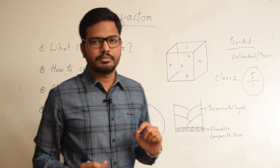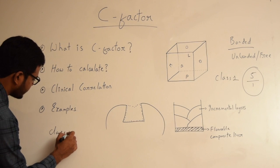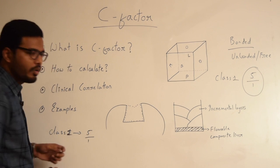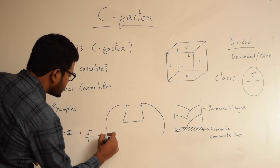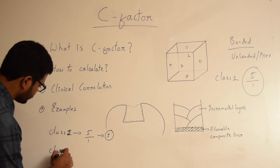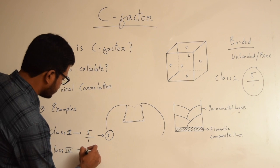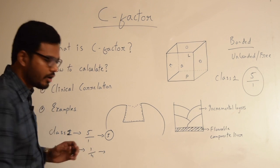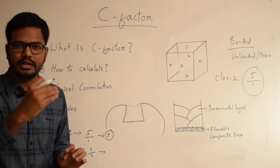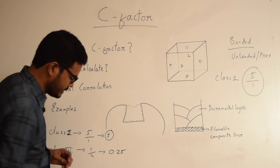Let me give you a few examples. In case of a class 1 cavity, we have five bonded surfaces to one unbonded surface, so the C-factor is 5. Coming to a class 4 cavity, the C-factor is 1 divided by 4 — that is, we have one bonded surface with four free surfaces, which include facial, lingual, proximal, and incisal. So the C-factor in case of a class 4 cavity is 0.25.